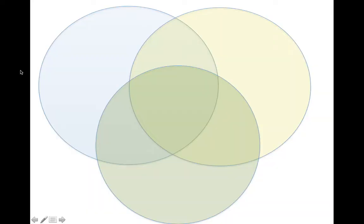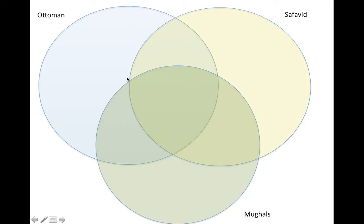Today I wanted to take a look at the gunpowder empires of the early modern age — the Ottomans, the Safavids, and the Mughals — and do it in a three-way Venn diagram. In the middle we'll cover all the similarities, and then we'll go over their differences, including some similarities that are shared between only two of the three.